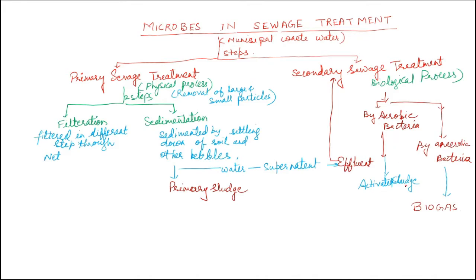This effluent is sent to the next tank for secondary sewage treatment, where aerobic bacteria act upon it and form flocs — clusters where bacteria and fungi grow and consume the organic waste in the water. After their activity, they produce activated sludge. The effluent is then sent to a chamber where anaerobic bacteria produce biogas, which is a mixture of methane, CO2, and H2. After treatment, the water is allowed to mix with water bodies.